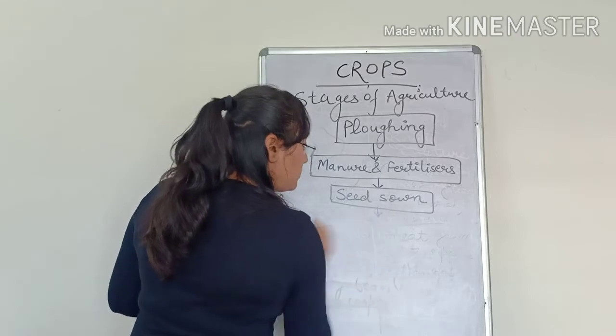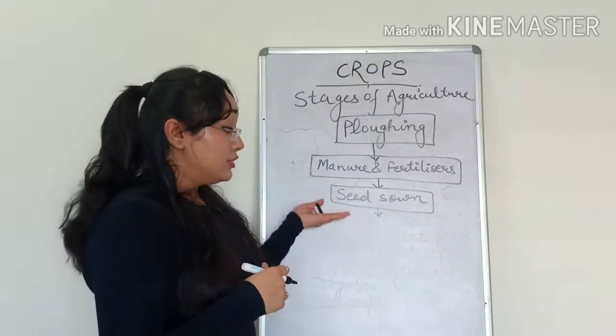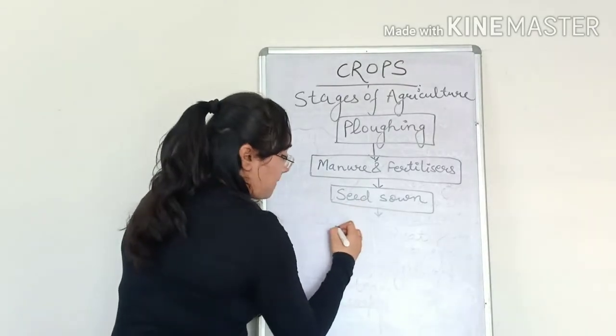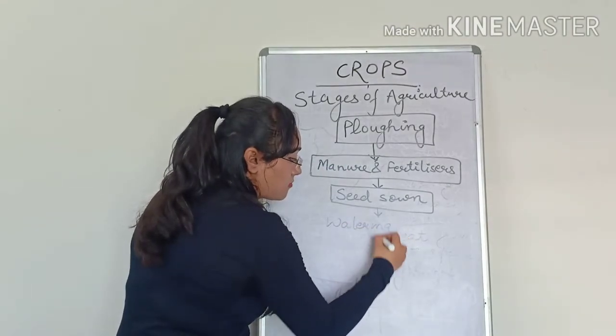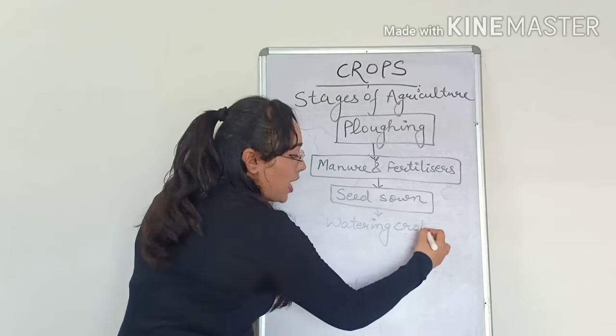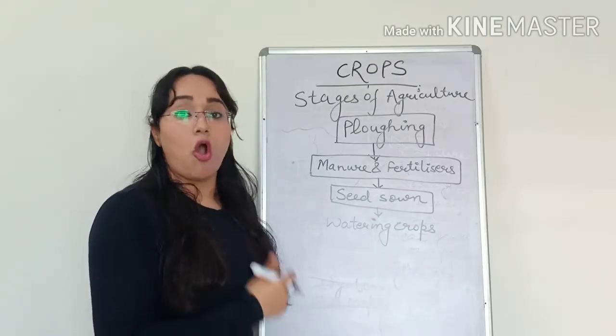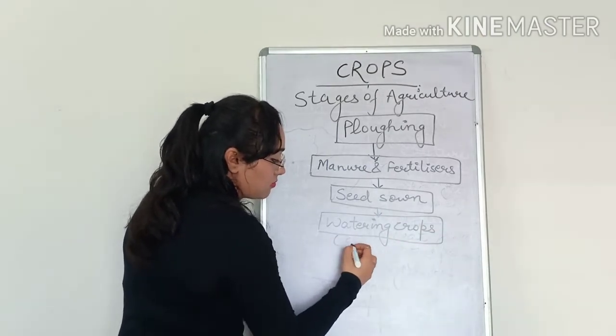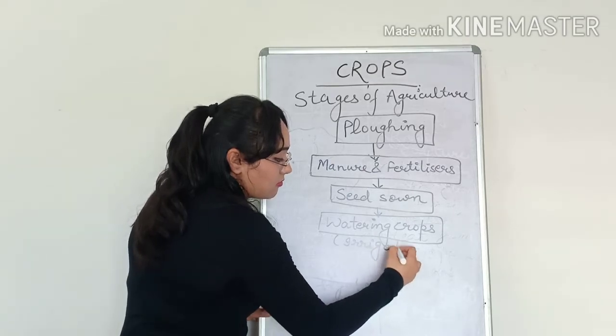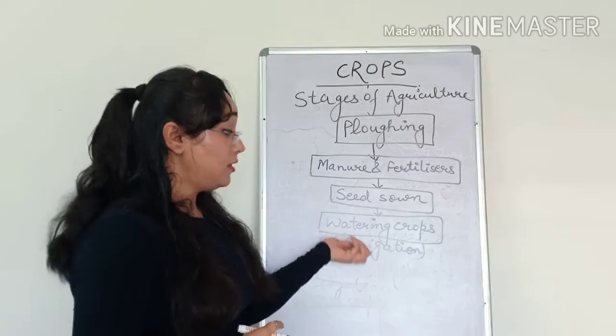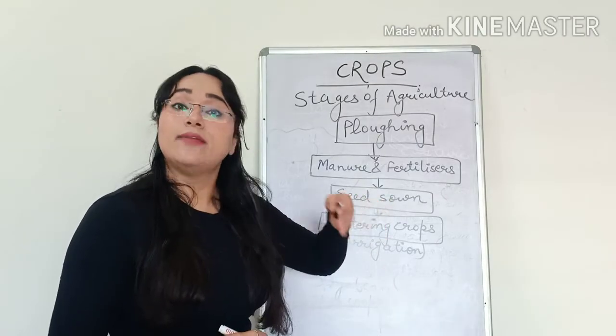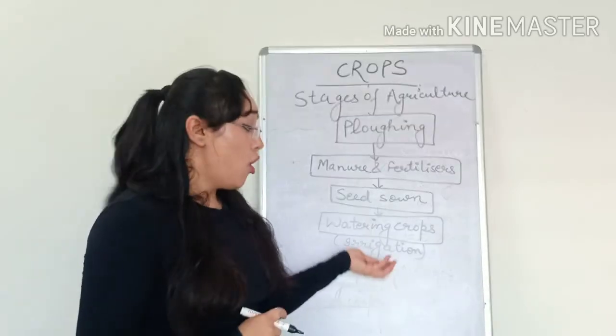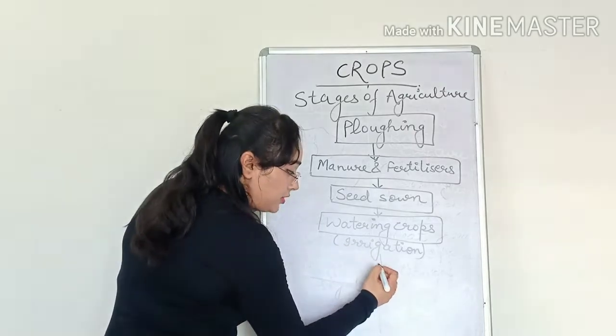After the seed is sown, we need to give proper water to the crops. The next step is watering the crops. The process of watering the crops is called irrigation. Proper water should be given equally and distributed equally into the crops. And there are various ways and methods of irrigation.